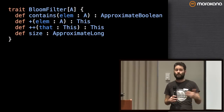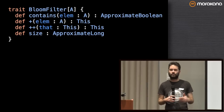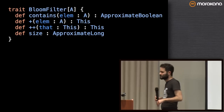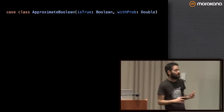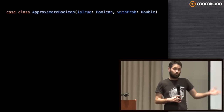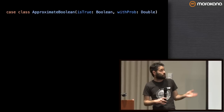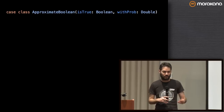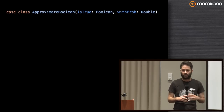One way to clean that up is by introducing new types. Rather than returning a Boolean and having a separate method for the probability that Boolean is wrong, we can return an ApproximateBoolean. Similarly, rather than returning a size and having separate bound methods, we can return an ApproximateLong. These types exist within Algebra. An ApproximateBoolean is basically a Boolean value and a probability. In the case of a Bloom filter, if it returns false, that probability is set to 1 — so it's an exact Boolean. But if it returns true, it gives you some probability, which is the probability of false positives.